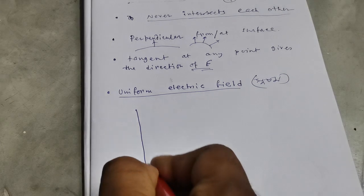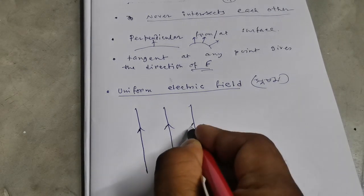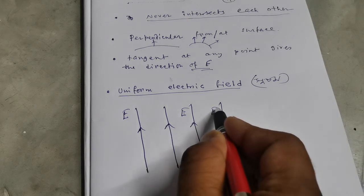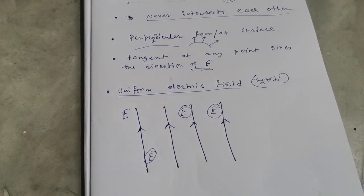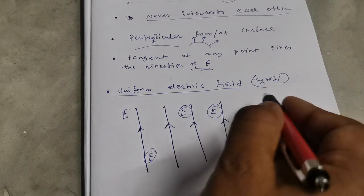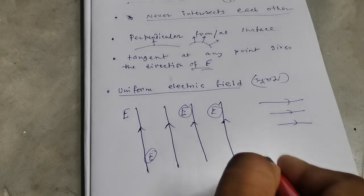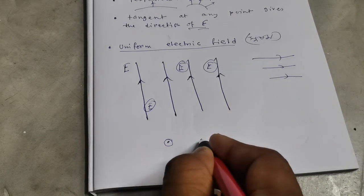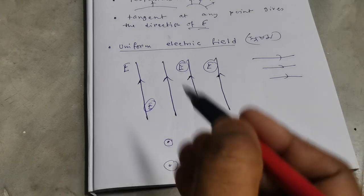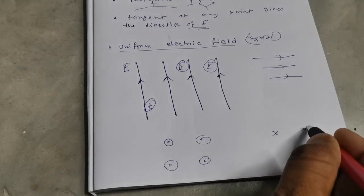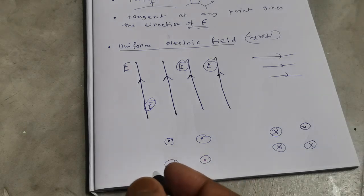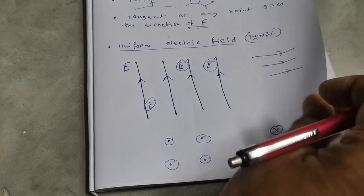The uniform electric field is the same at every point — the electric field magnitude and direction are the same at every point. For this, the electric field lines are parallel to each other. So the lines are parallel and in the upward direction. This is the uniform electric field direction. The cross is perpendicular but downward. This is the uniform electric field concept.